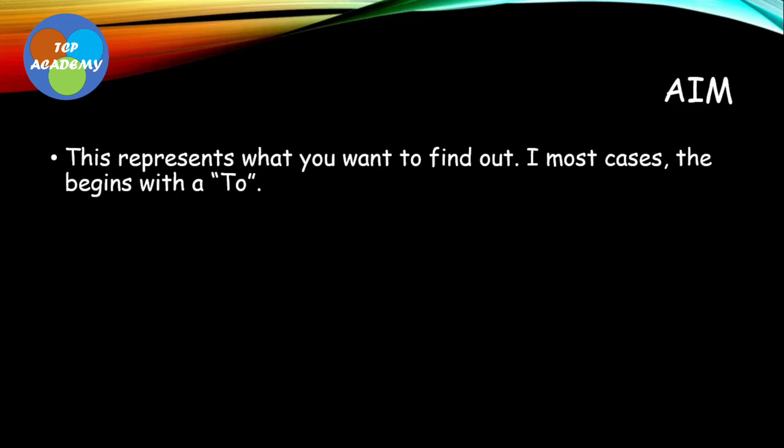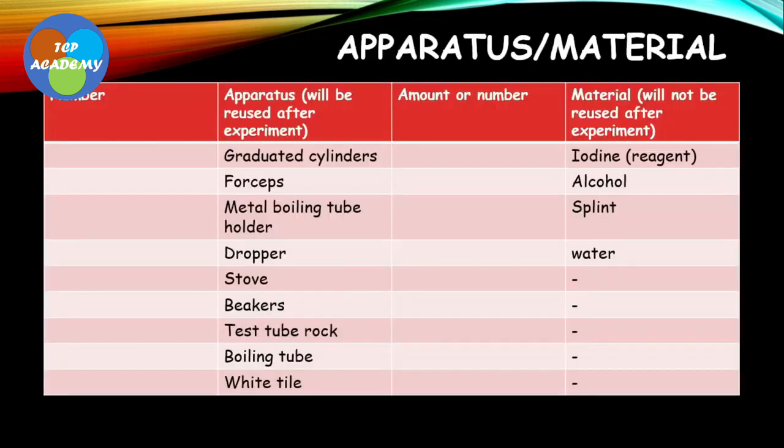Apparatus and material is really interesting. There's a slight difference between apparatus versus material. Apparatus are those things that are able to be reused in the lab, such as your graduated cylinders, forceps, metal boiling tubes, droppers, stove—these things will be cleaned and ready for another lab.